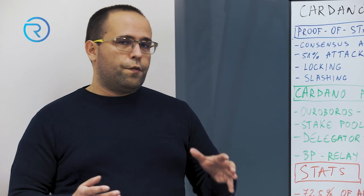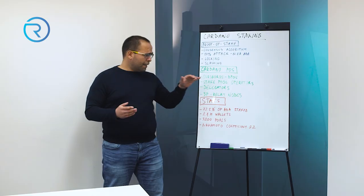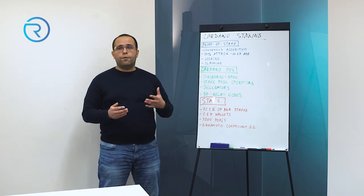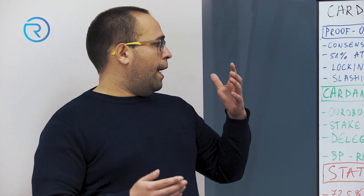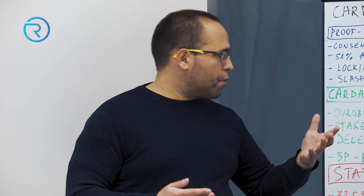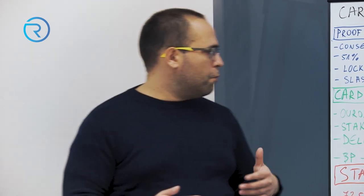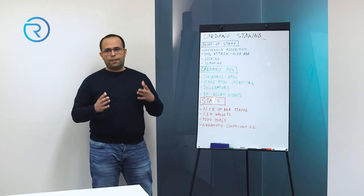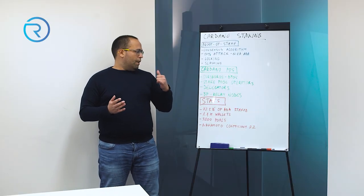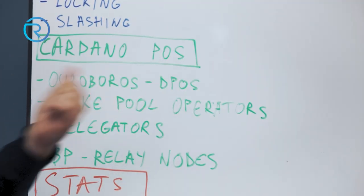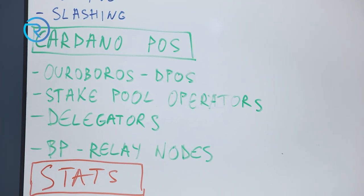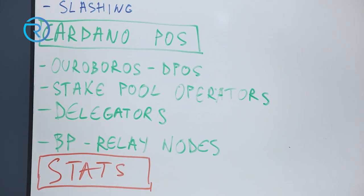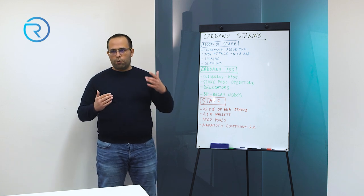Now we have Cardano's version of proof of stake. As mentioned in previous tech talks, Ouroboros is the name of the consensus algorithm, and Ouroboros is actually DPoS — or delegated proof of stake. We have a couple of different actors in this protocol. The first type of actors are called stake pool operators — they are the validators, responsible for running the computers and the machinery, maintaining server connections to the network at all times.